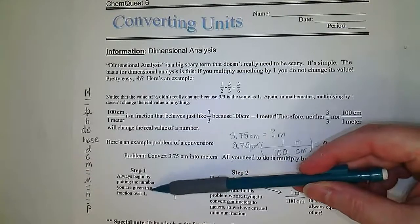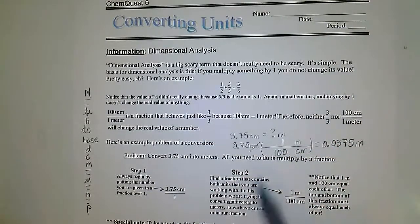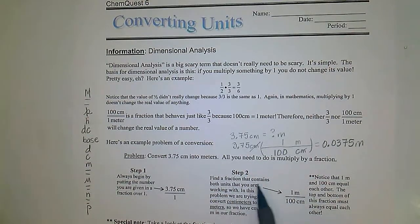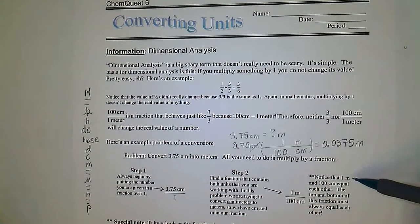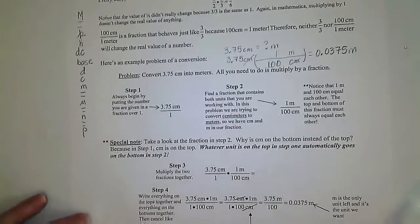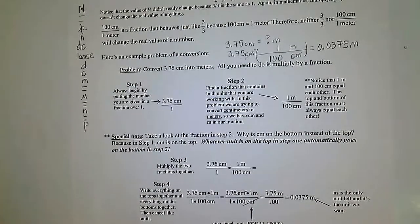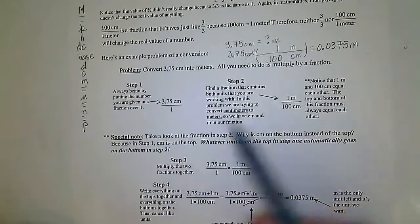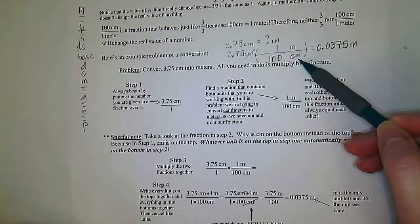Always begin by putting the number you are given in a fraction over one. Find a fraction that contains both units that you are working with. In this problem, we are converting centimeters to meters, so we have centimeters and meters in our fraction. Notice that 1 meter and 100 centimeters equal each other — the top and bottom of the fraction must always equal each other. Whatever unit is on the top in step one automatically goes on the bottom in step two, because I want that unit to cancel out.